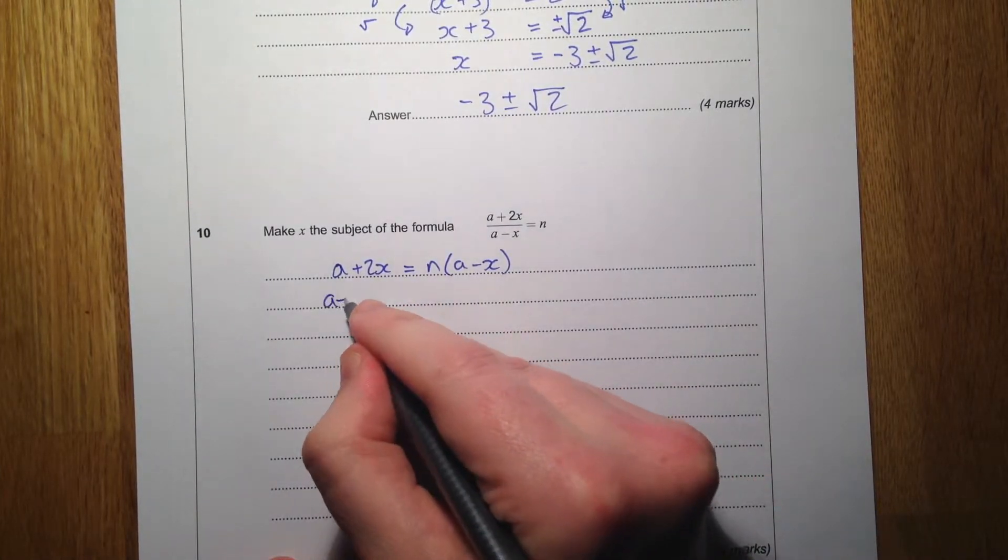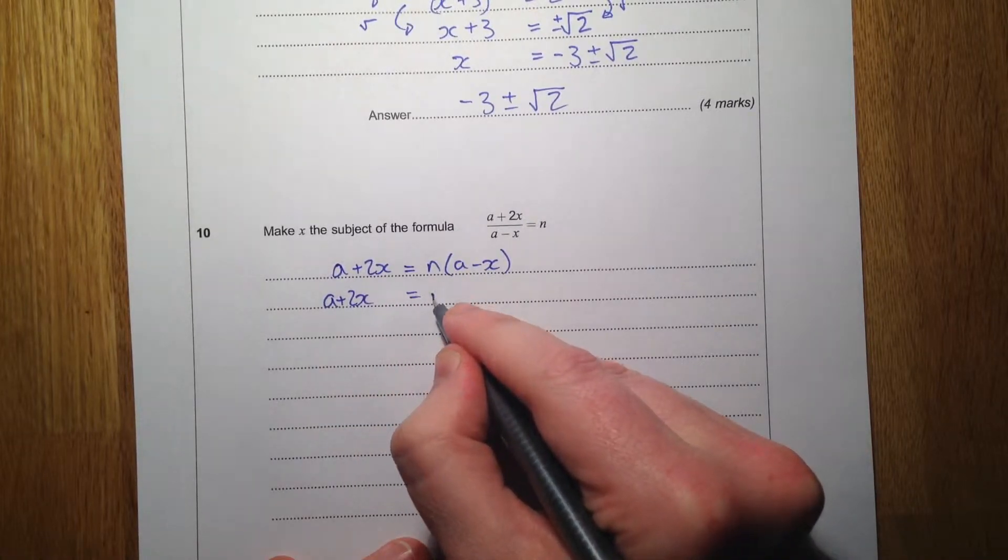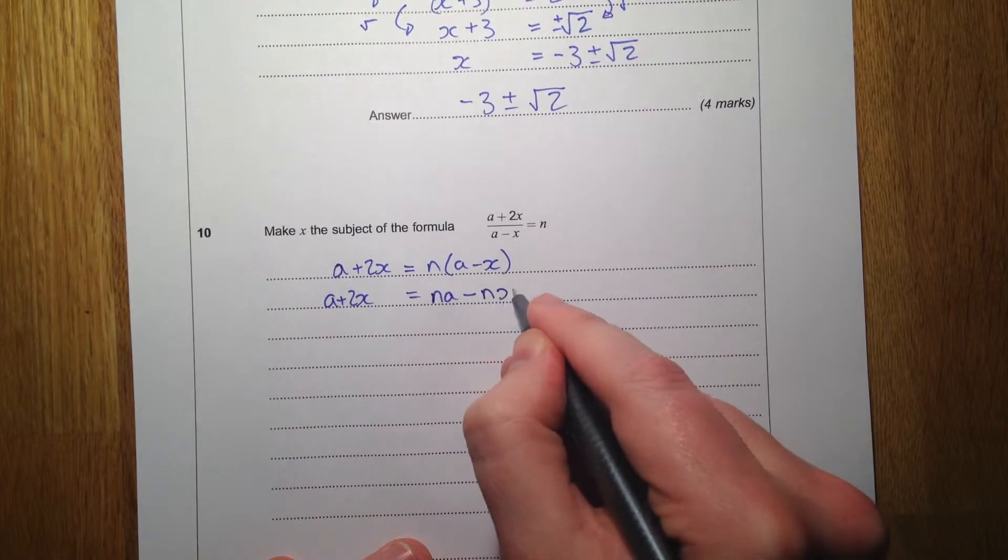Then I'm going to multiply that out. So it's going to be na take away nx.